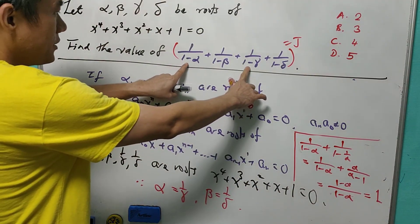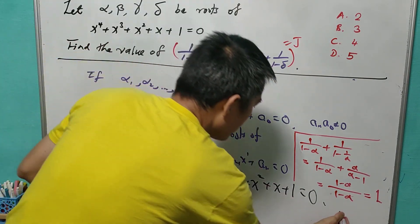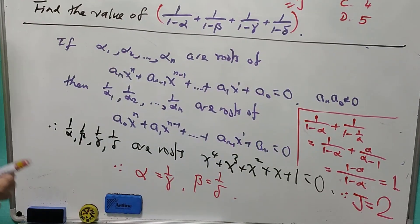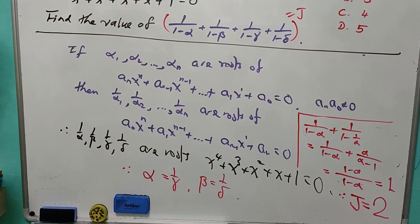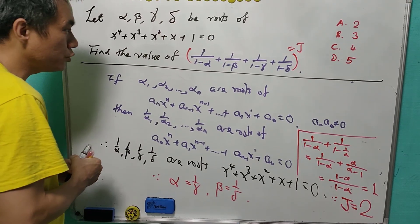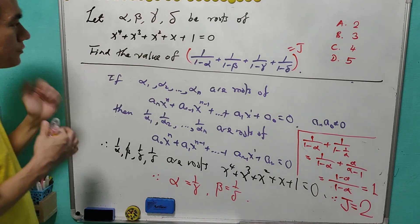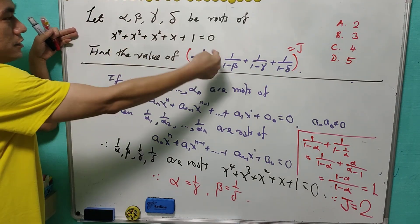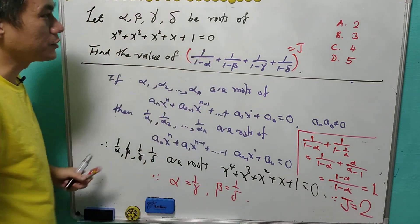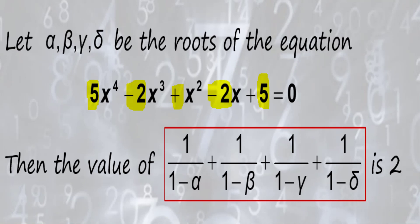So the sum of those two terms equals 1, and likewise the sum for the other pair also equals 1. Therefore J = 1 + 1 = 2. This method works for any degree-4 equation with palindromic coefficients, as long as 1 and −1 are not roots. That ends Method 3.